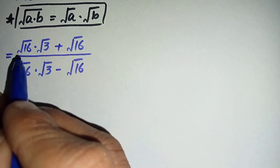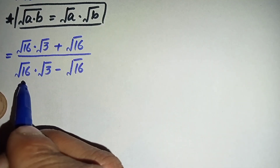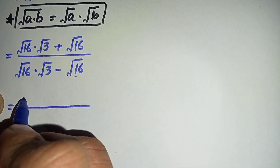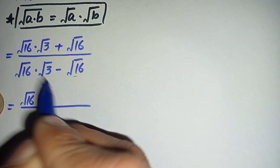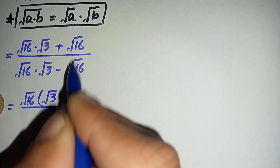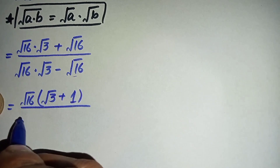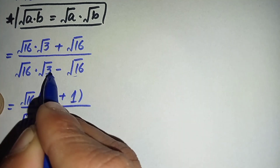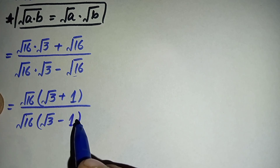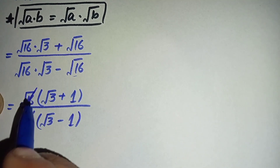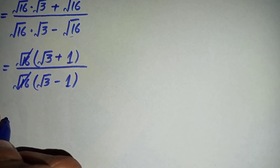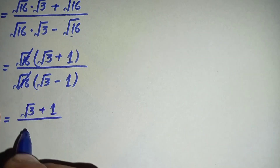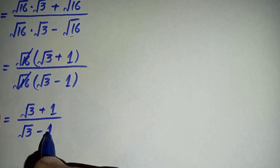Now looking at the numerator and denominator, square root of 16 is common. So let us take square root of 16 as common from the numerator — leaving square root of 3 plus 1 — and also from the denominator — leaving square root of 3 minus 1. Now we cancel this square root of 16 with the other square root of 16, so the equation becomes square root of 3 plus 1, divided by square root of 3 minus 1.